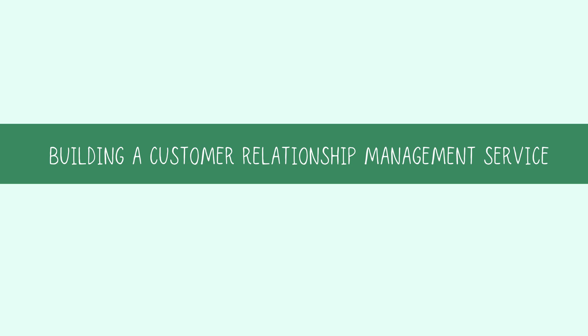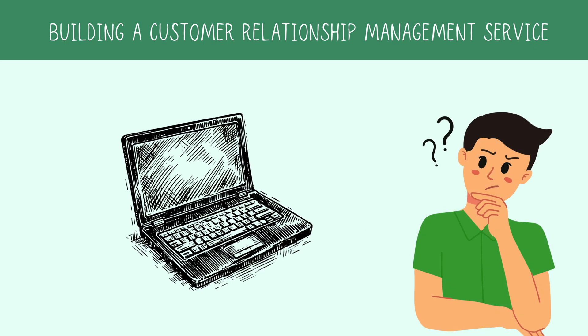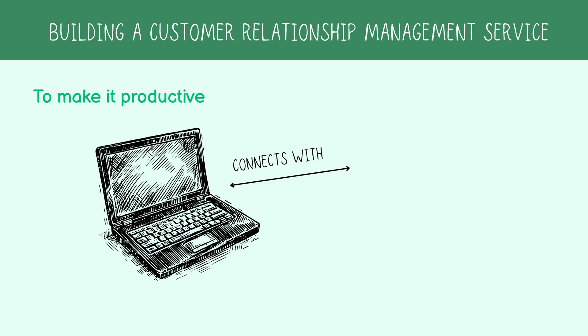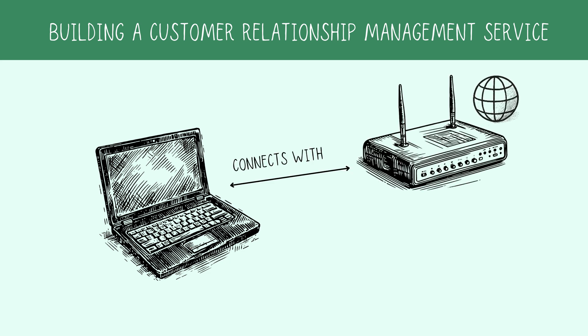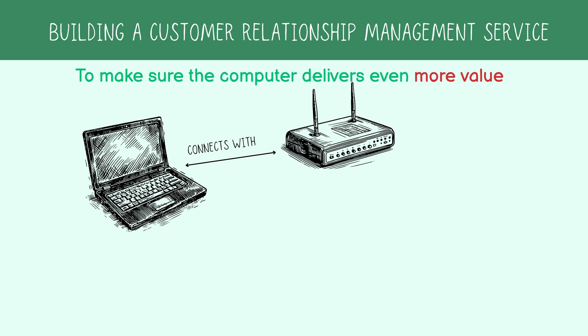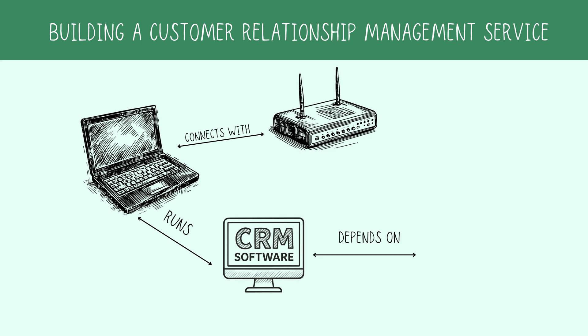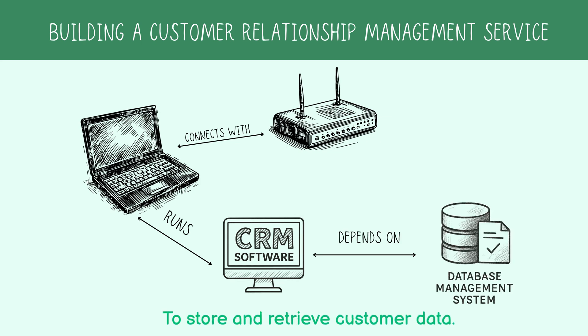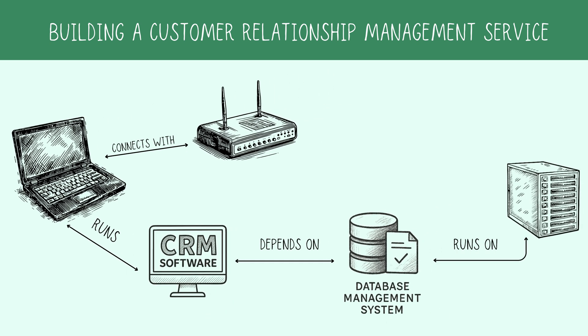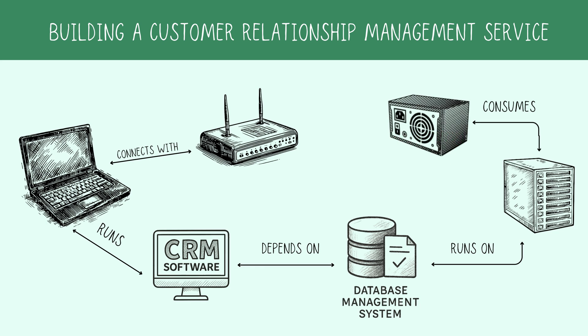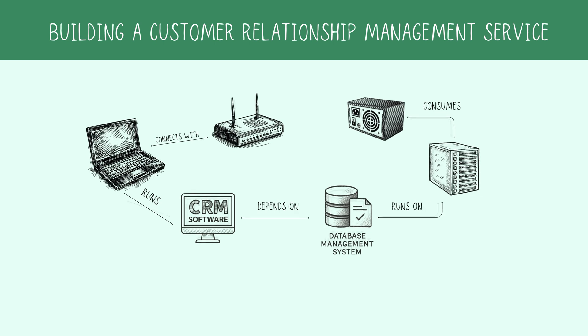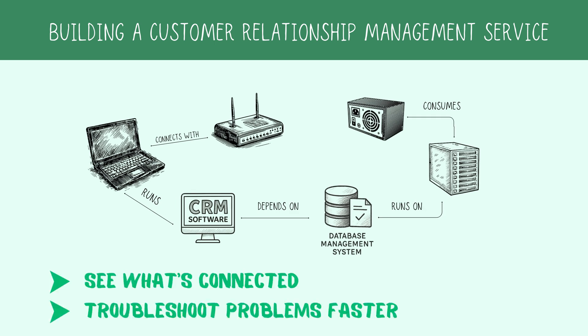Let's visualize the relationship with an example. Assume we are building a customer relationship management service, starting with a computer. On its own, the computer is not very useful. To make it productive, we connect it to a router, which links it to the company network or internet. We let it run a CRM application — perfect for managing customer relationships. That app relies on a database system to store and retrieve customer data. The database runs on a server, housed in your company's data center. To keep everything running, that server needs a steady power supply. If any of these components fail, the CRM service could go down. By mapping these relationships in a CMDB, IT teams can quickly see what's connected and troubleshoot problems faster.